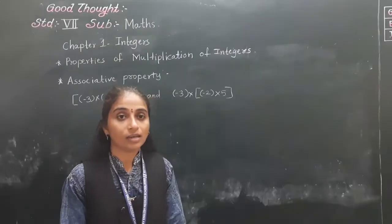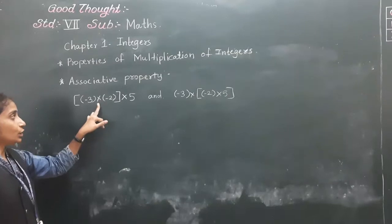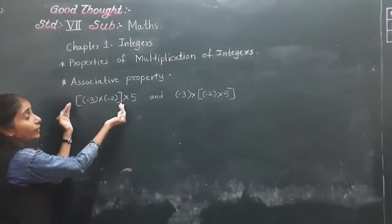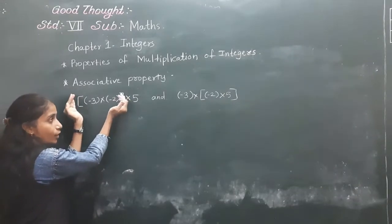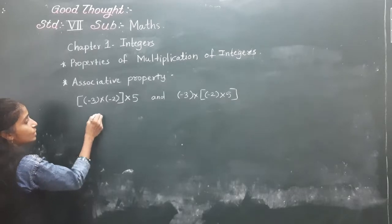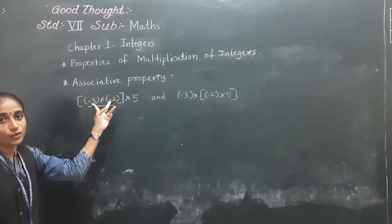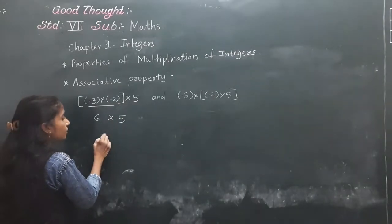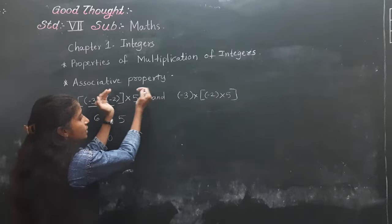Let's move towards the next property. See this example: minus 3 into minus 2 into 5. The same example is given here with different bracket groupings. In the first grouping, we solve minus 3 into minus 2 first — two negative integers give positive 6 — then 6 into 5 equals 30.